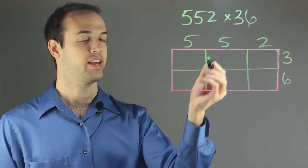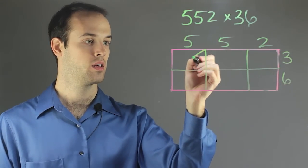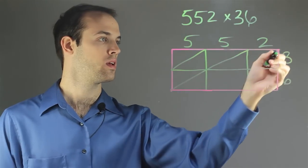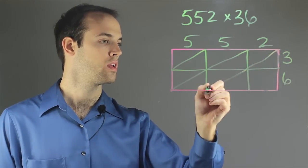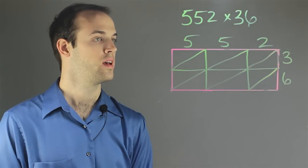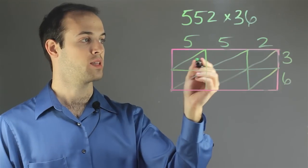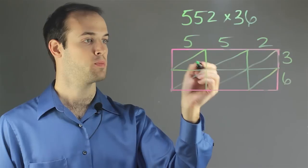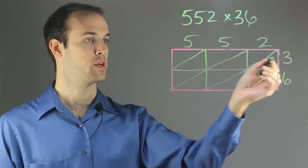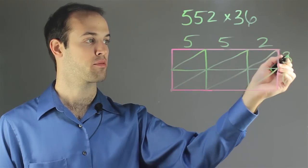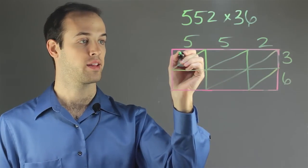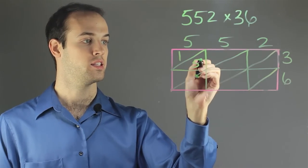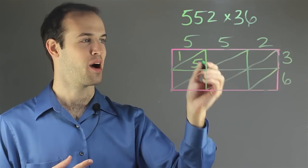And then I want to divide each box diagonally, right down the middle, just like this. Then in each box I'm going to multiply the appropriate numbers from each row and column. So in this box I'm going to do 5 times 3 because it's the intersection of where 5 and 3 meet. So 5 times 3 is 15. I'm going to write the tens digit in this box and the ones digit, which happens to be a 5, in this box.